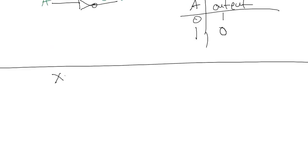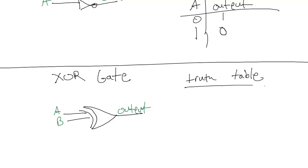And there's one more gate called the XOR gate. And this has two inputs. And it looks very similar to the OR gate except it has this extra line in the front. And let's call this AB output. And let's write a truth table for this guy.